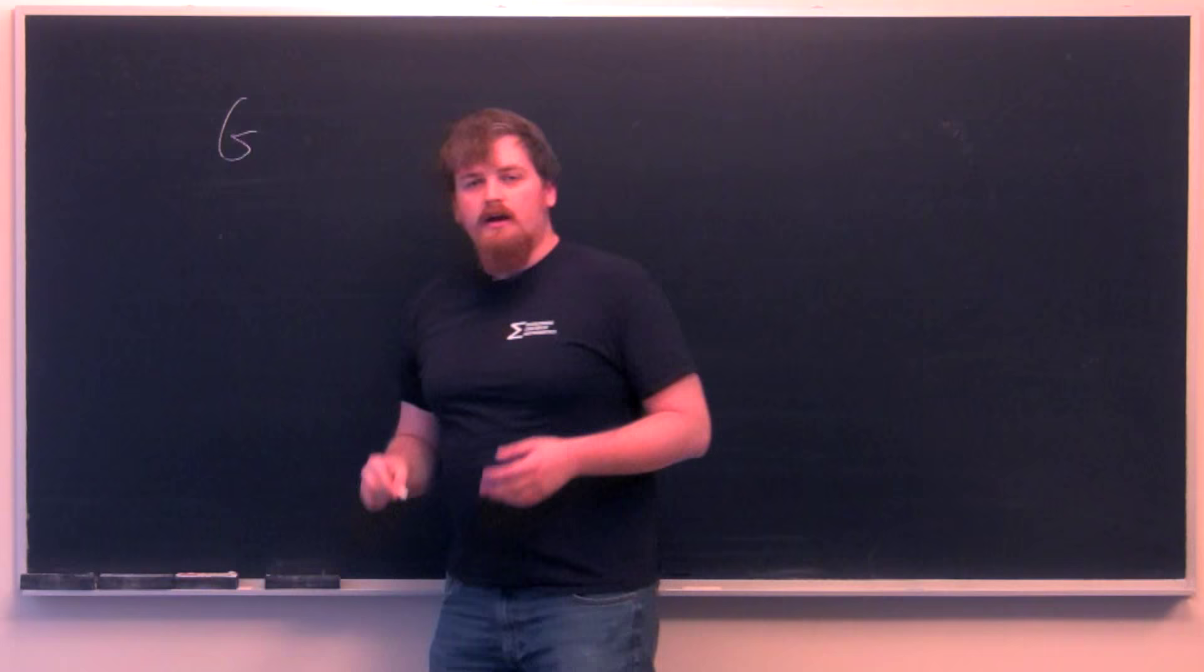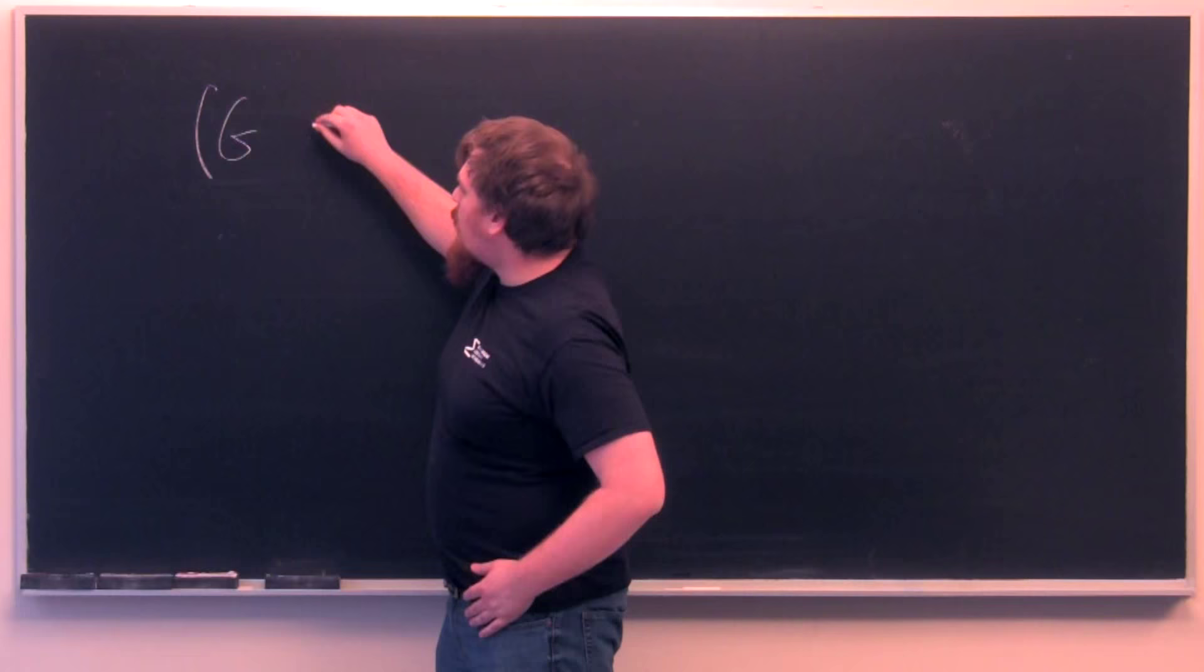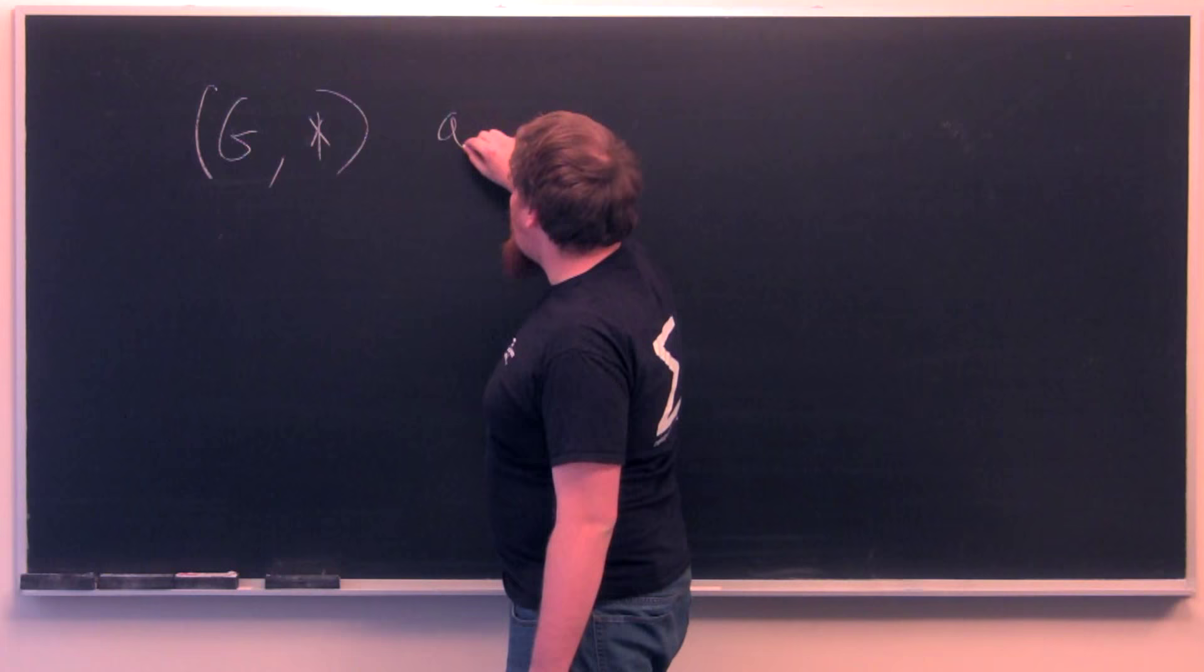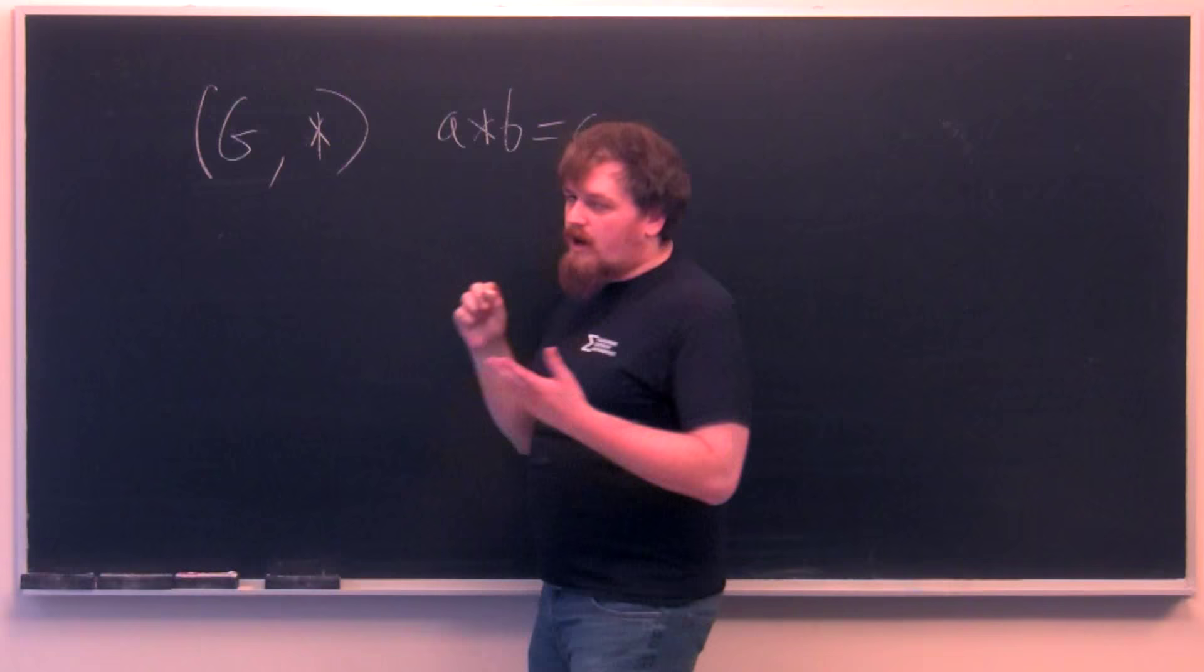So a group, we'll call it G. A group is just a set, also called G, along with an operation, call it star, which is a function that sends two elements from G to G itself. So it will be of the form a star b equals c, where a, b, and c are all members of G.